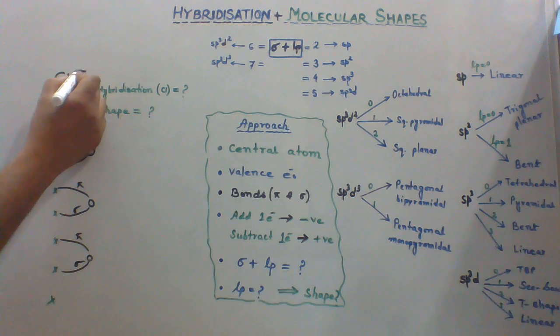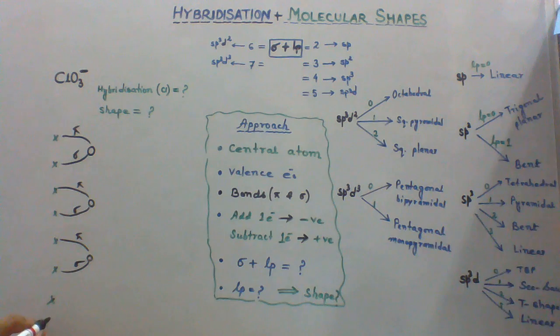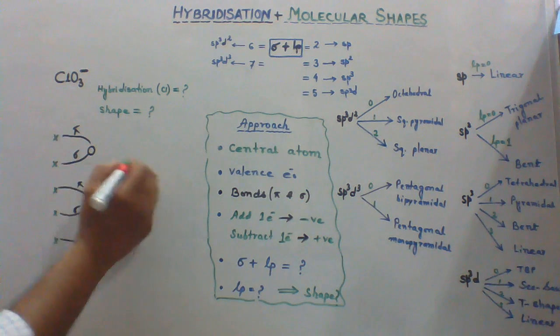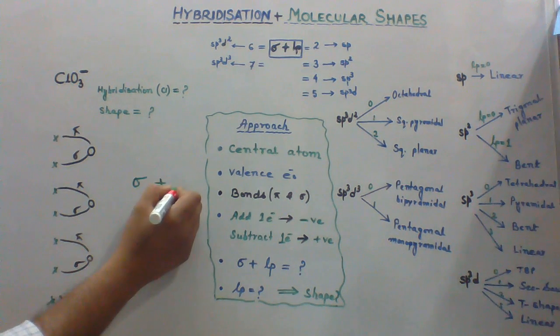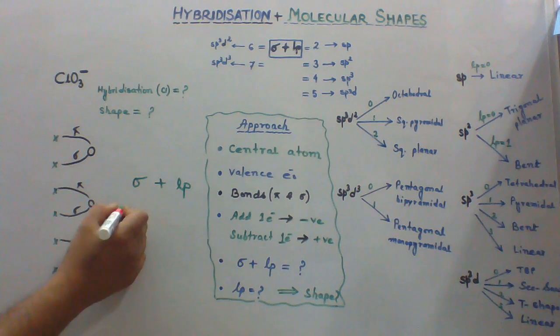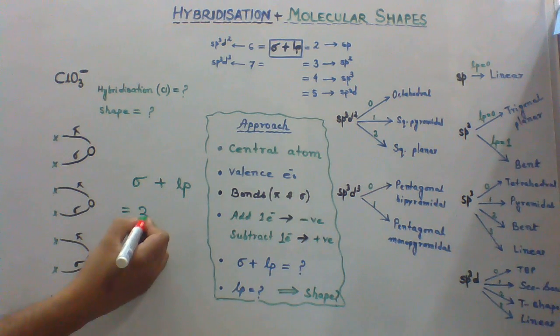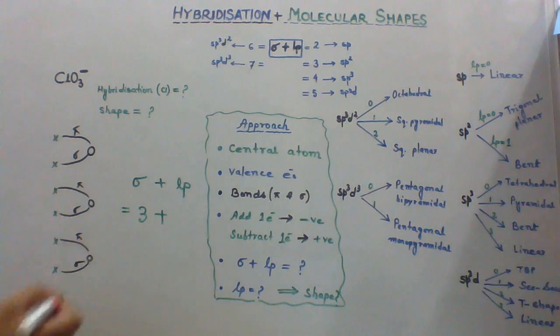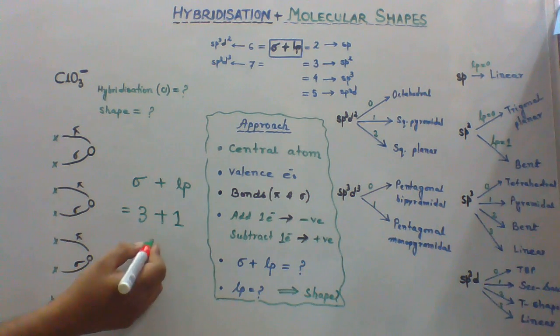And if you see carefully, we have one negative charge. For this negative charge, we are going to add one more electron here and these two making one lone pair. And now you calculate how many sigma bonds we have and how many lone pairs we have. We have 3 sigma and we have one lone pair. So the summation gives us 4.